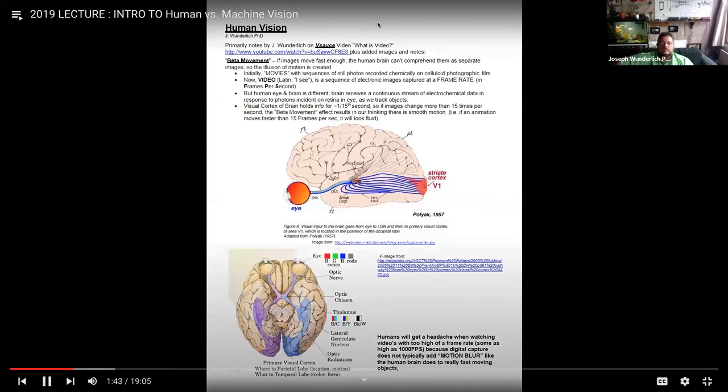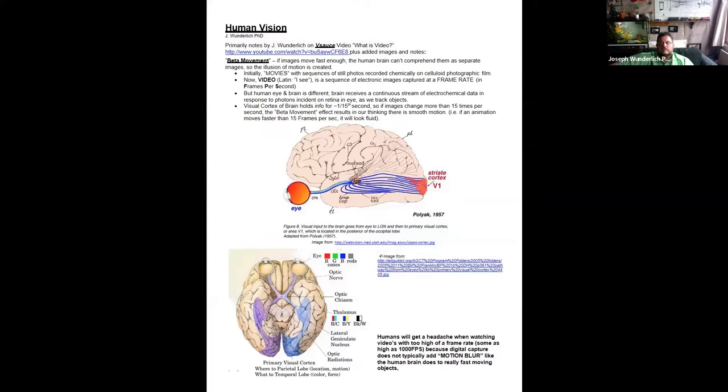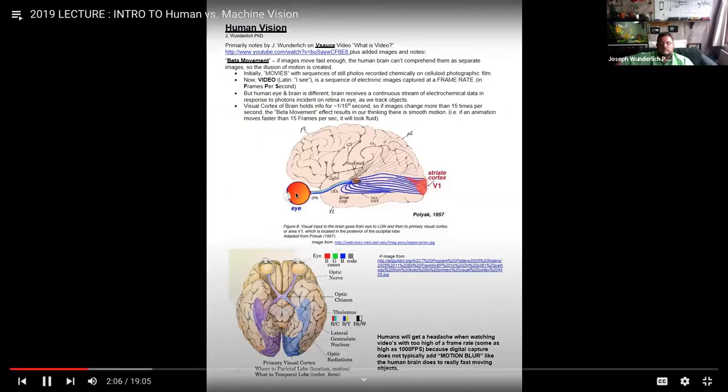First is beta movement. What beta movement is: if images move fast enough, the human brain can't comprehend them as separate images. So there's an illusion of motion created. Initially, old movie films were a sequence of still photos recorded chemically on photographic film. You can just go fast enough with all the individual images and it looks like motion. Video is a sequence of electronic images captured at a frame rate, so frames per second.